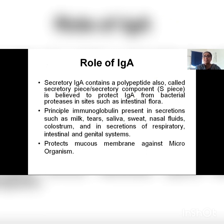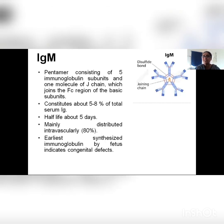The role of IgA: the secretory protein — the S-shaped structure — protects it from the protease enzymes of bacteria, so in the intestinal flora the protease enzymes of bacteria are not able to destroy this IgA. IgA is present in secretions such as milk, tears, saliva, sweat, nasal fluids, and secretions of the respiratory, intestinal, and genital systems. We can conclude that IgA is present in all the secretions of the body, and it protects mucous membranes against microorganisms.